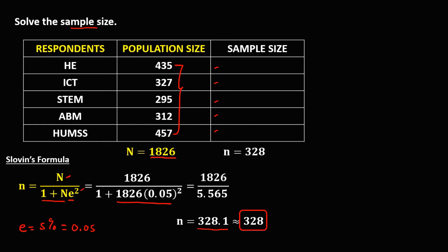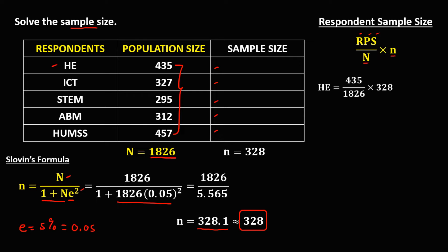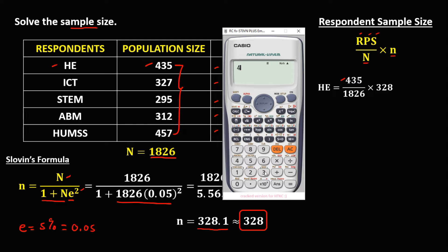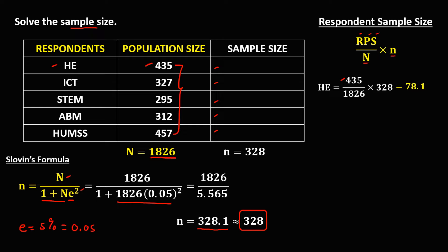Now to find the sample size for every respondent, we use the formula: respondent population size over the total population size, times the total sample size. For the HE respondents, the population size is 435. So we have 435 divided by 1,826, times 328, which equals 78.1. Since sample size is a whole number, approximate to 78.